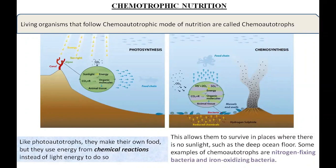Some examples of chemo-autotrophs are nitrogen-fixing bacteria located in the soil, iron-oxidizing bacteria located in lava beds, and sulfur-oxidizing bacteria located in the deep sea.